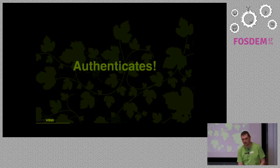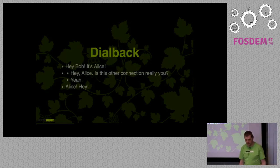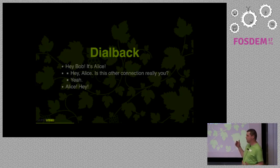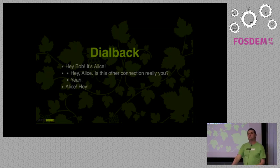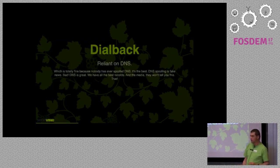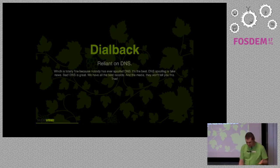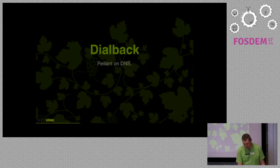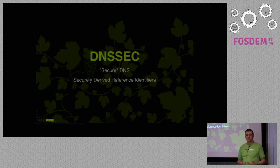A quick reminder of how authentication works in server-to-server XMPP. Originally we had dialback — our first attempt at security in S2S. Two connections: one comes in saying 'hey, it's Alice'; the receiving server connects back to the originating server and checks it's the right connection. Dialback is reliant on DNS — and DNS can be spoofed. We've never had a known problem in the XMPP network, but it's not good to rely on it. So maybe we should do DNSSEC.